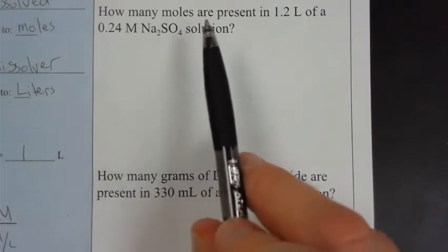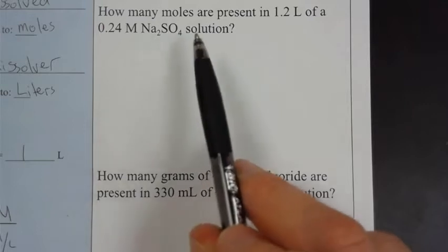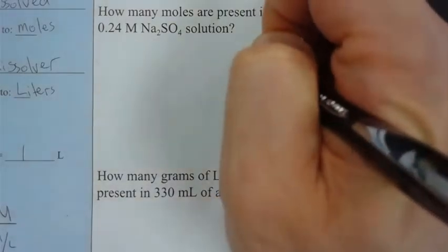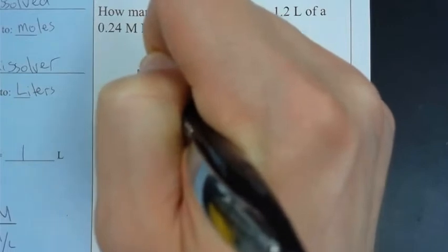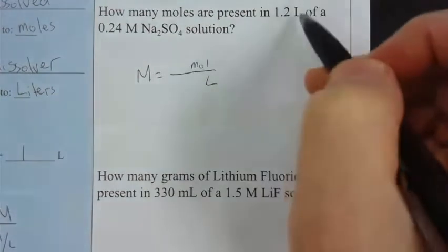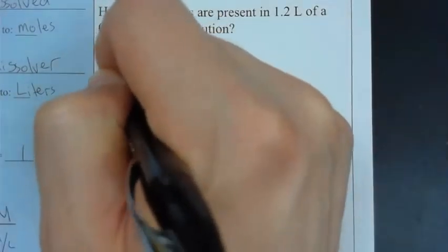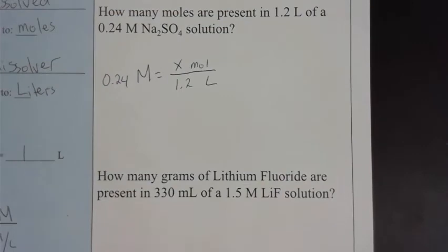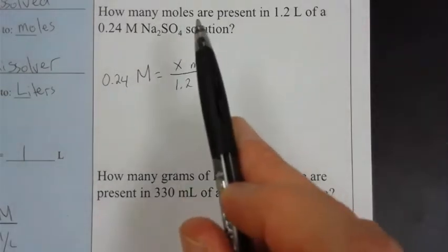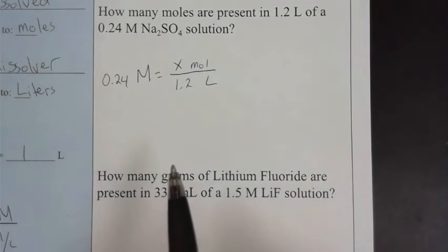I want to know how many moles are present in 1.2 liters of a 0.24 molar sodium sulfate solution. We're using this equation: molarity equals moles over liters. We're provided with the volume, 1.2 liters, and the molarity. All we're doing is solving for moles. We've got two of the three components of that equation, and since we're solving for moles, not grams, all we need to do is solve for x.